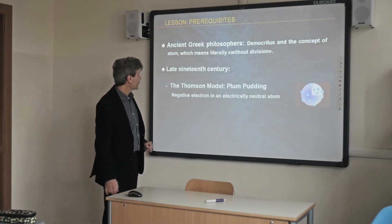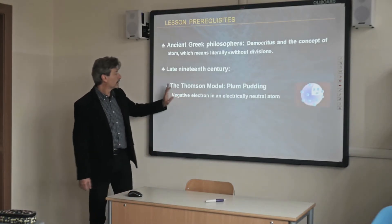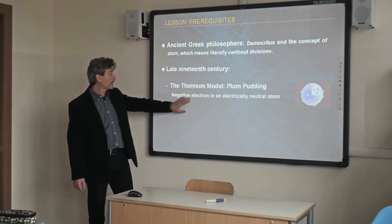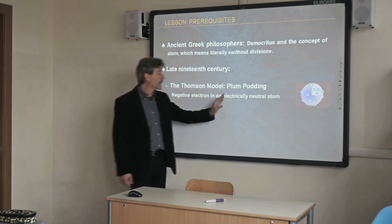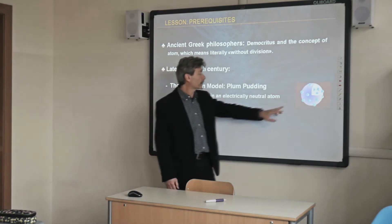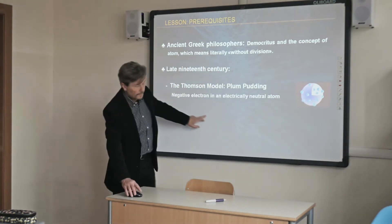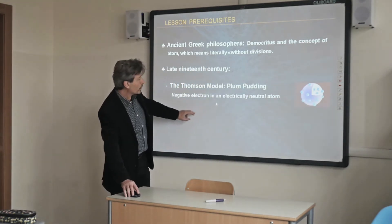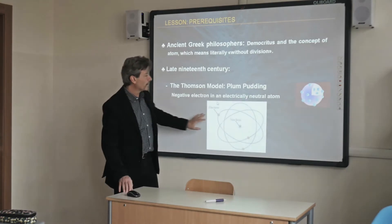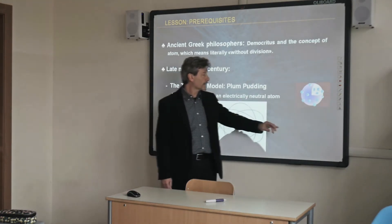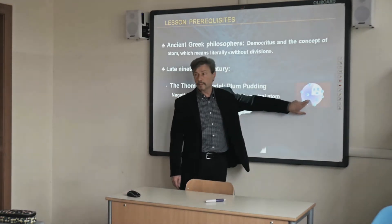So, the Thomson model — Plum Pudding — has negative electrons in an electrically neutral atom. But physicists had some problems with this model.